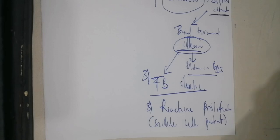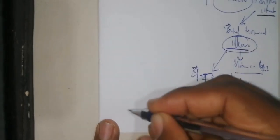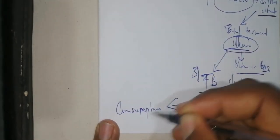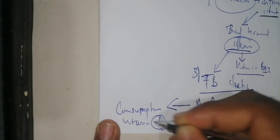In sickle cell patients, there is always hemolysis taking place because the red blood cells of the sickle cell patient are sickle in shape. The spleen recognizes that these cells are abnormal in shape, so it continuously destroys them. Since the spleen and the reticuloendothelial system destroy these cells, there is going to be a reactive proliferation by the bone marrow, which will produce more reticulocytes. This is called consumptive vitamin B9 and B12 deficiency.